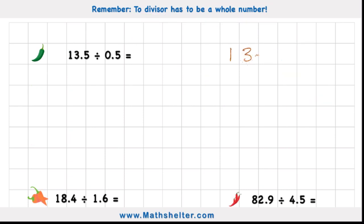Question one: 13.5 divided by 0.5. Well, the divisor has to be a whole number. And at the moment, our divisor is a decimal. So what can we do to this decimal to turn it into a whole number? Well, I could multiply it by 10. Multiplying it by 10 would mean that 0.5 becomes just 5.